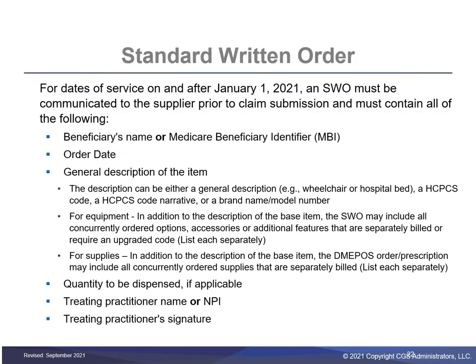The standard written order must be obtained by the supplier prior to submitting a claim for all initial orders and must include: the beneficiary's name or Medicare Beneficiary Identifier (MBI), the order date, a general description of the item, the quantity to be dispensed if applicable, the treating practitioner name or National Provider Identifier (NPI), and the treating practitioner's signature. Note that signature and date stamps are not allowed.